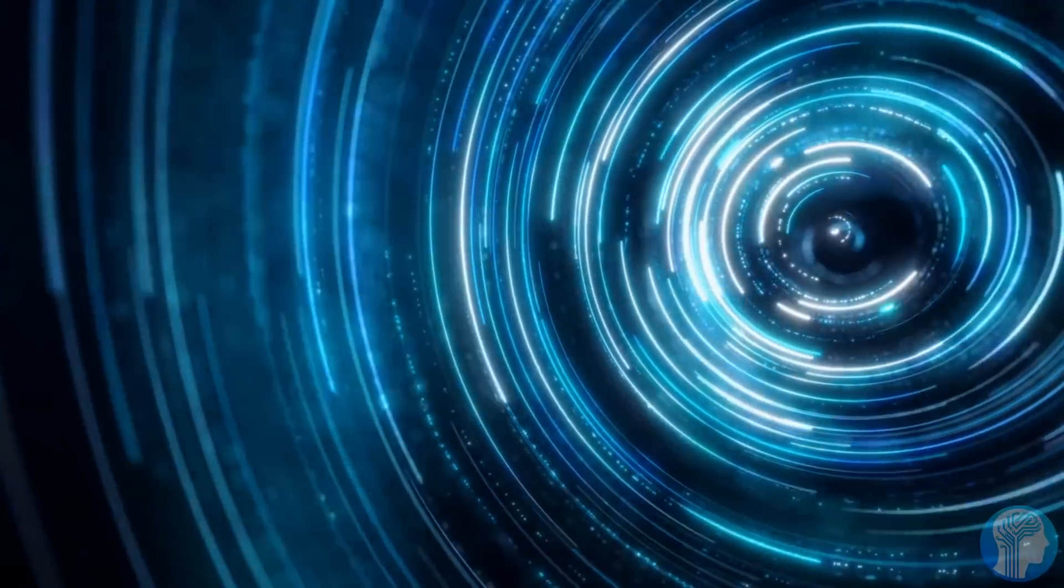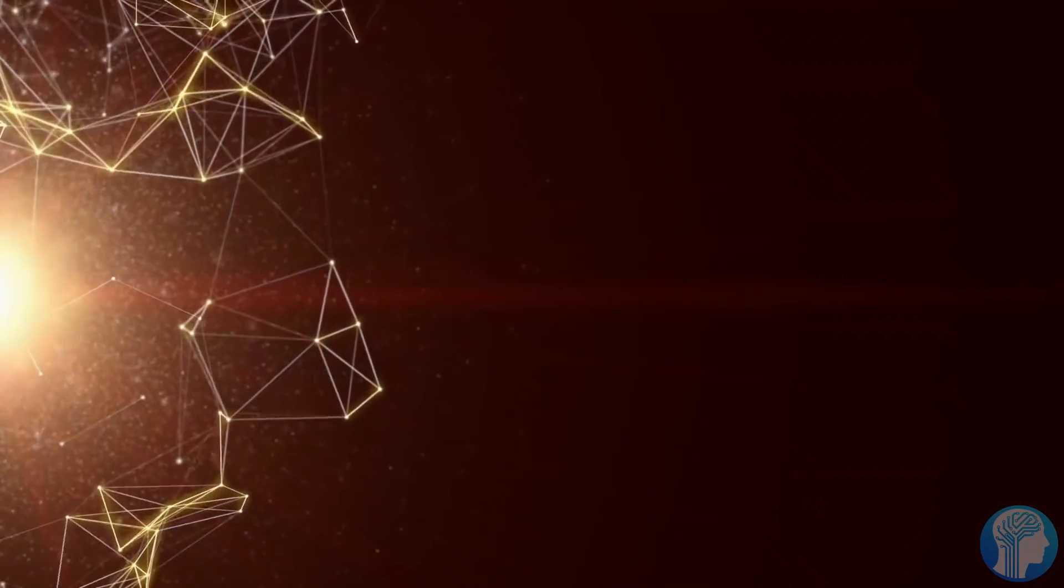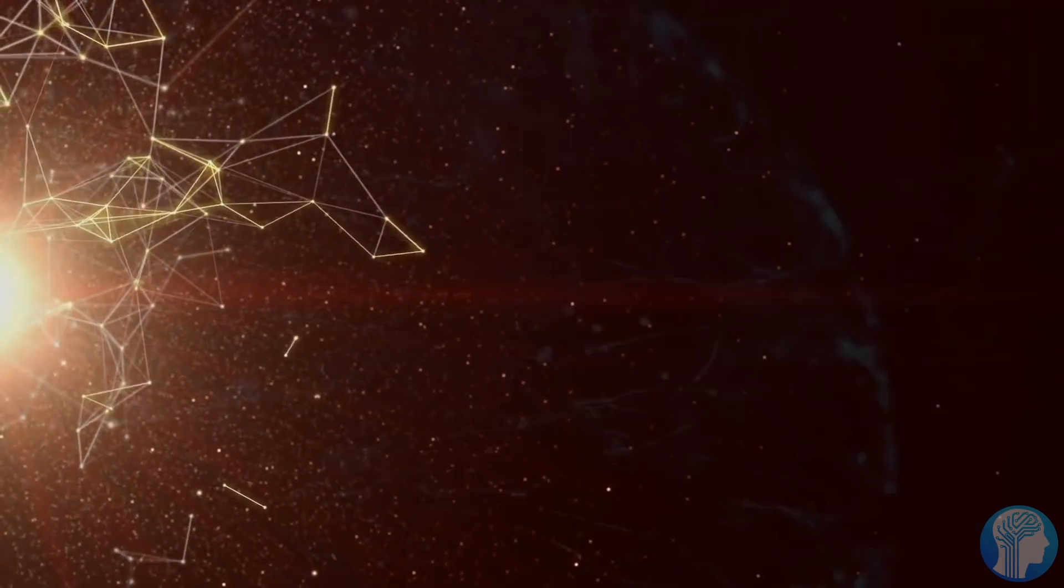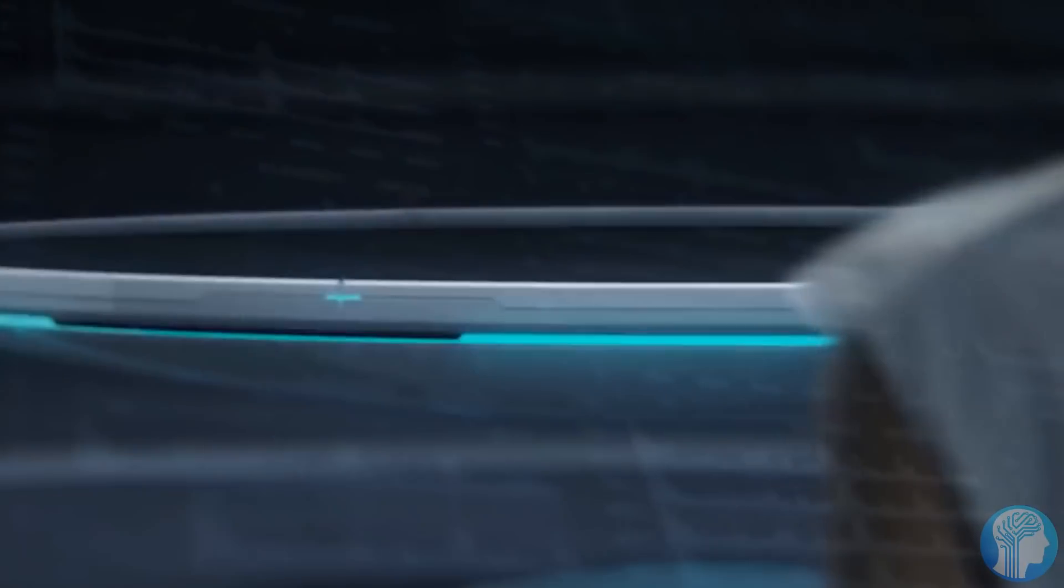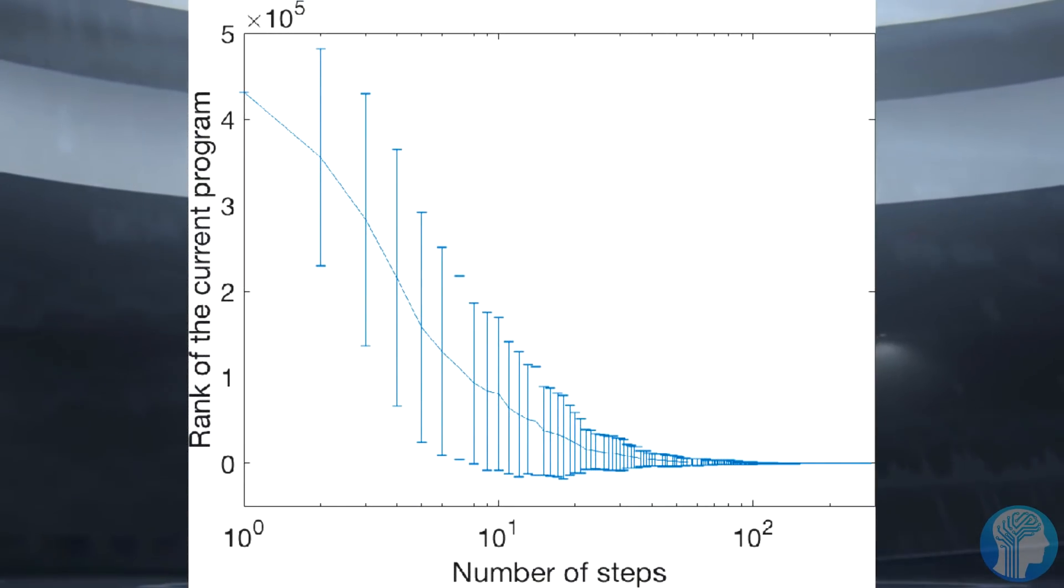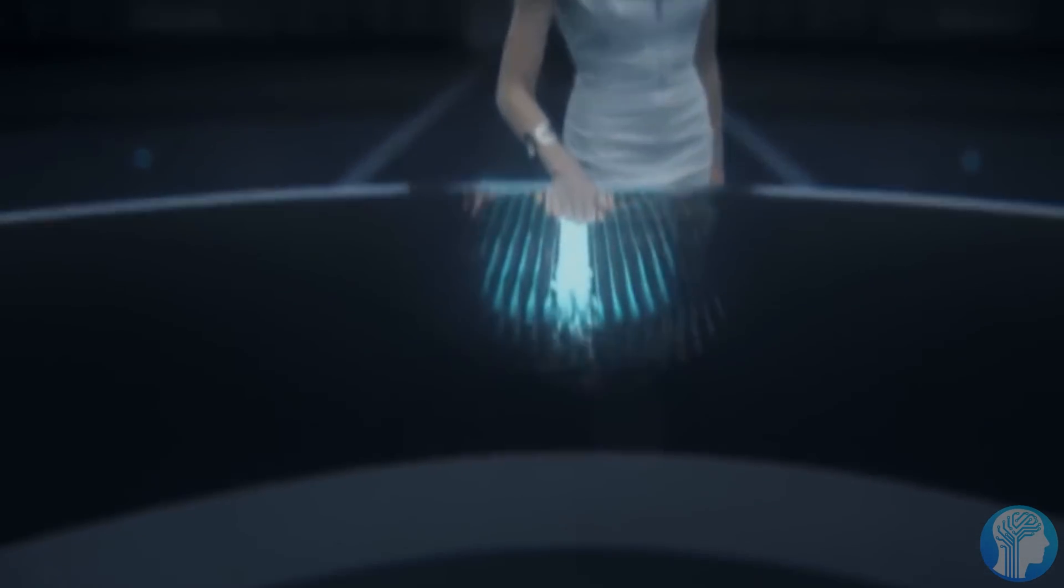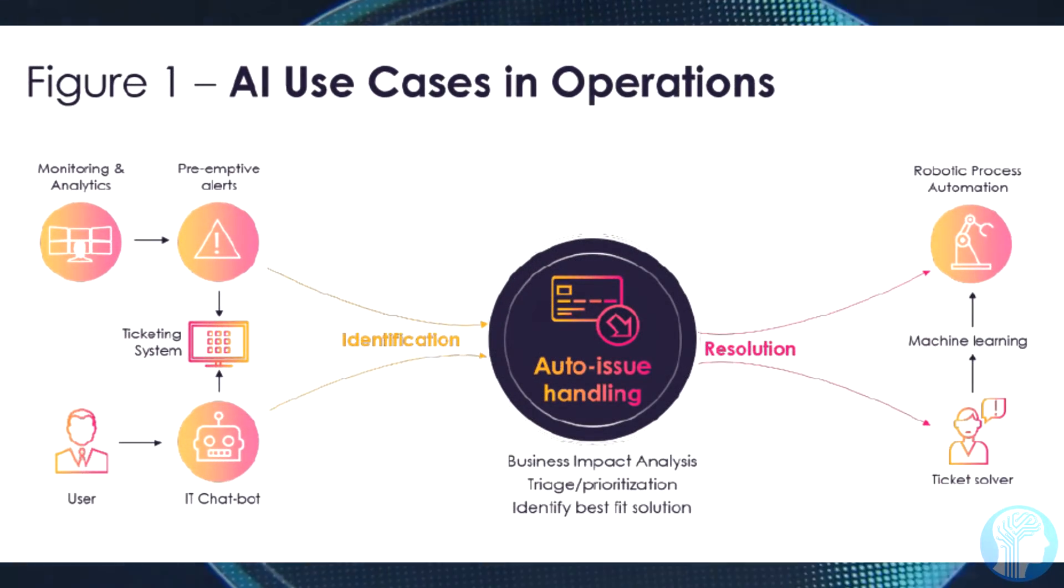A recent research released on the Preprint Server Archive outlines how a sort of algorithm known as a hypernetwork may significantly speed up the training process. The study's hypernetwork learnt the internal connections, or parameters, of a million sample algorithms, allowing it to pre-configure the parameters of fresh, untrained algorithms.